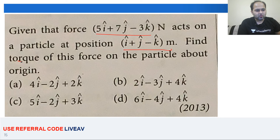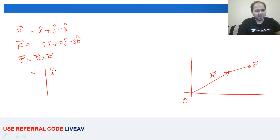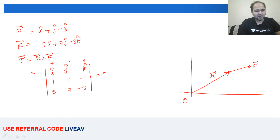हमें torque निकालना है. Torque का formula है τ = R⃗ × F⃗. Cross product निकालने के लिए determinant का use करूँगा. R के components: 1, 1, −1. F के components: 5, 7, −3. Determinant में plus, minus, plus signs आएंगे.